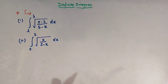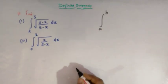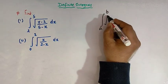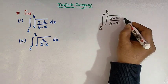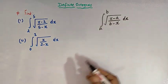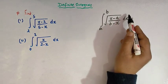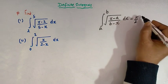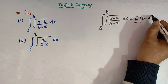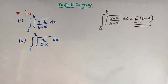Now, whenever we come across an integral of this type — suppose we have the limits from a to b, and we have the integrand as √((x − a)(b − x)) dx — the direct result for this type of integral is π/2 times (b − a). So this is the direct value of this kind of integral.